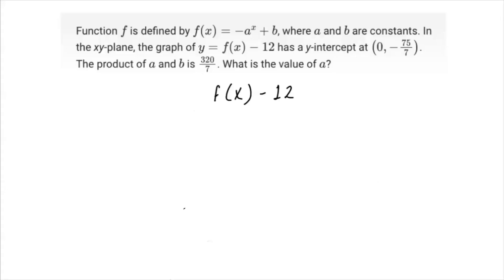Function f is defined by f(x) equals negative a raised to the x power plus b, where a and b are constants. In the xy-plane, the graph of y equals f(x) minus 12 has a y-intercept at (0, -75/7). The product of a and b is 32/7. What is the value of a?